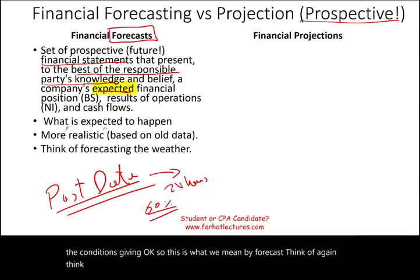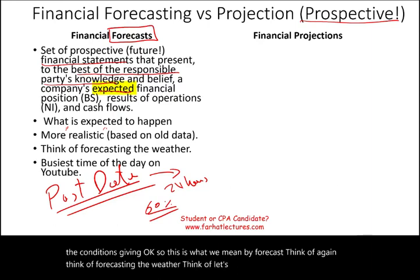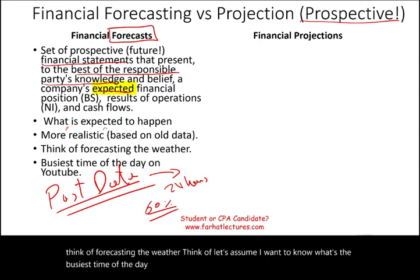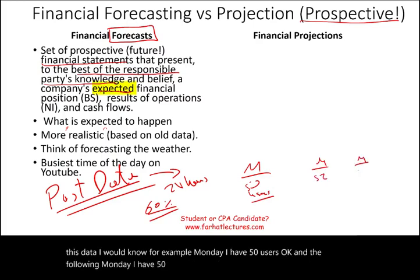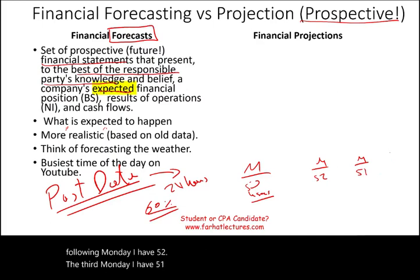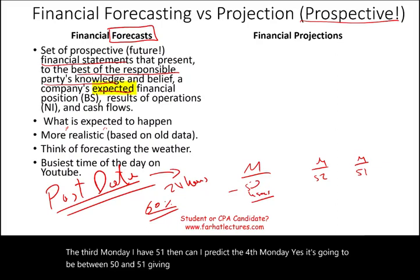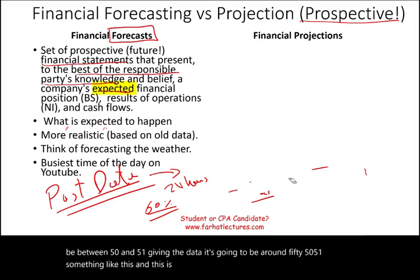Think of forecasting the weather. Or assume I want to know the busiest time of the day on YouTube for my users. I have data, and based on this data I would know that on Monday I have 50 users, the following Monday 52, the third Monday 51. Can I predict the fourth Monday? Yes — it's going to be between 50 and 51, around 50 or 51. This is what forecasting is: looking at past data to forecast the future.